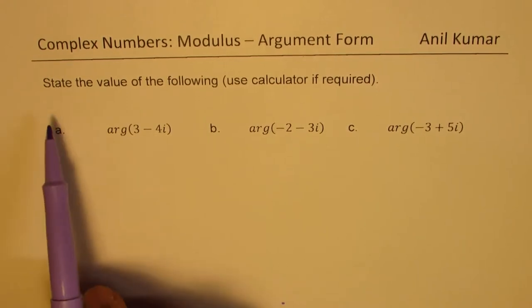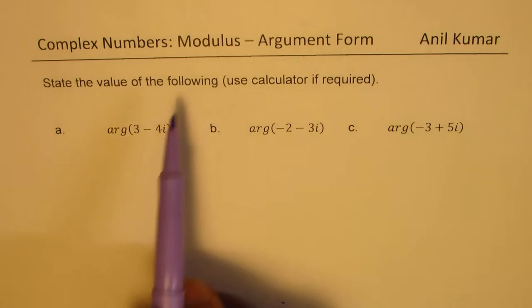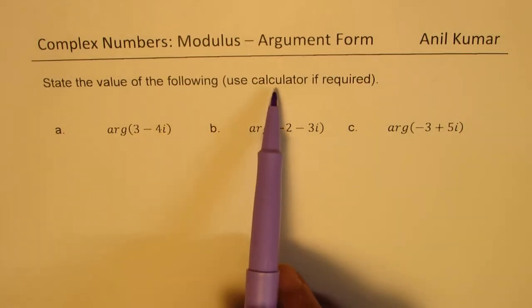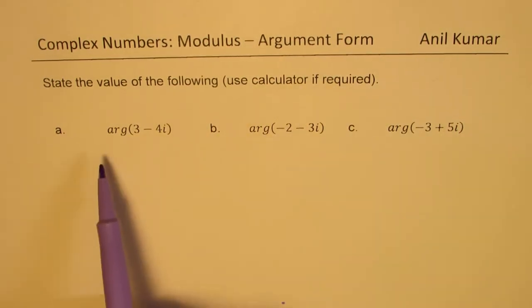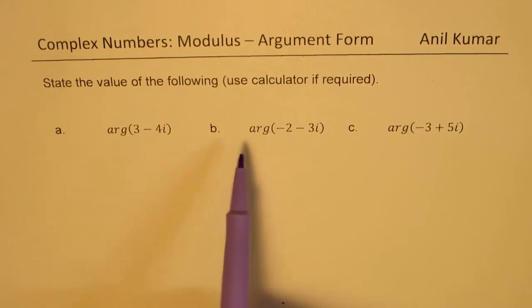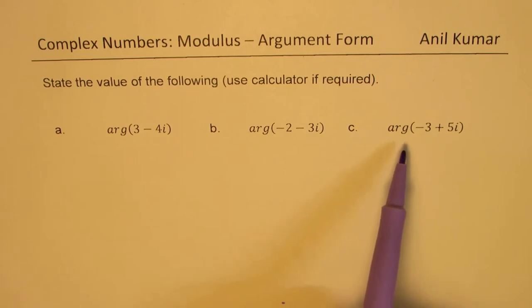Now the question here is state the value of each of the following. You can use calculator if required. A: Argument for 3 minus 4i. B: Argument for minus 2 minus 3i. C: Argument minus 3 plus 5i.